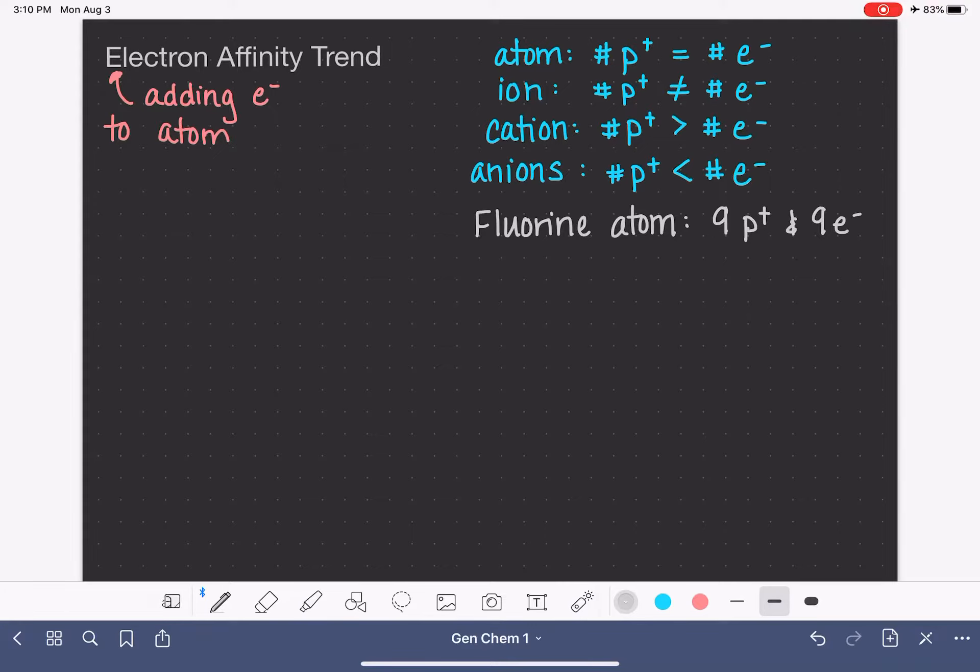The fluorine ion, as an ion, we still have nine protons because that is what makes it fluorine. But instead, we have 10 electrons.